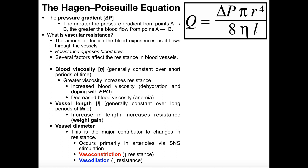A second factor that increases vascular resistance is vessel length. This is something that is constant over long periods of time — it's not something the body can really regulate. It really depends on how much adiposity you have. For people with more body fat, the vessels are going to have to be longer to accommodate all of that extra mass. So if you have longer vessel length, that's going to increase resistance and decrease blood flow. Notice that length is in the denominator of the equation as well.